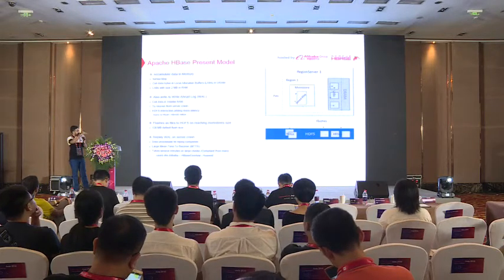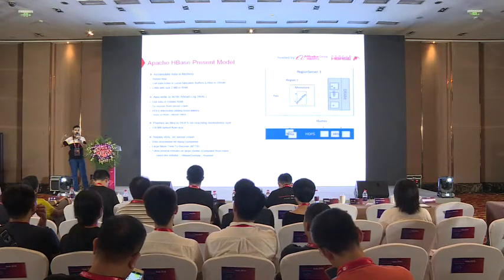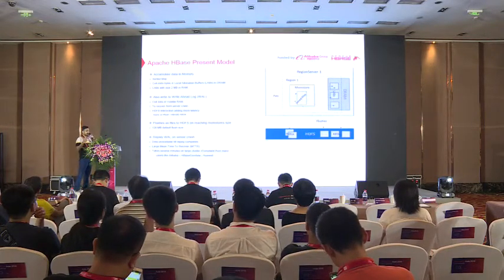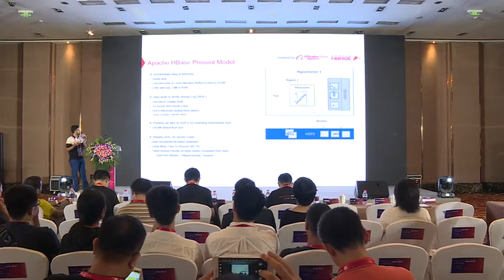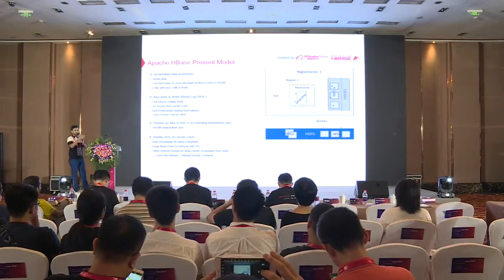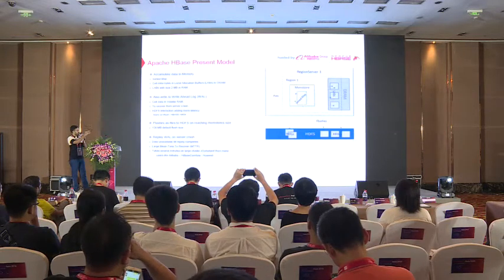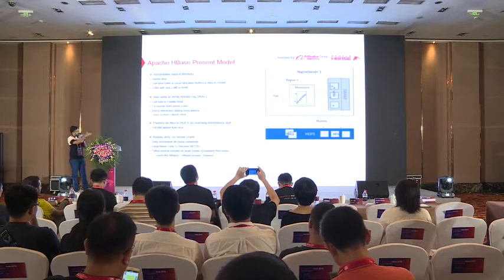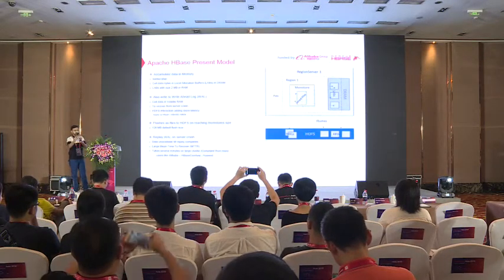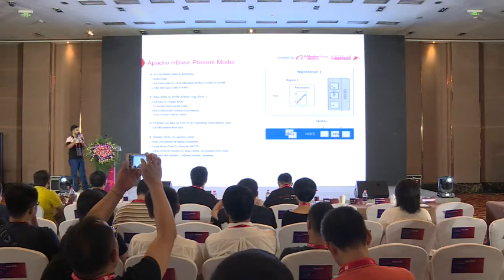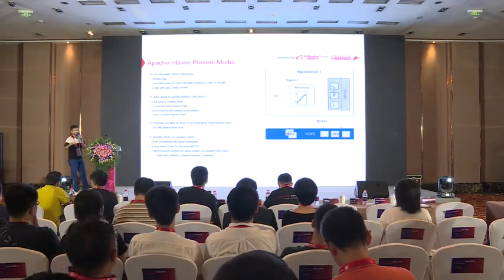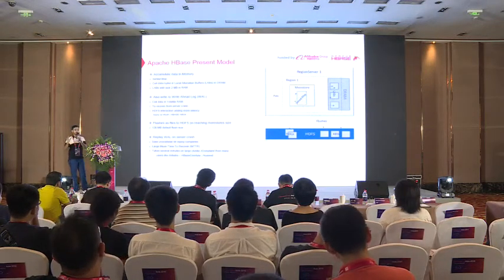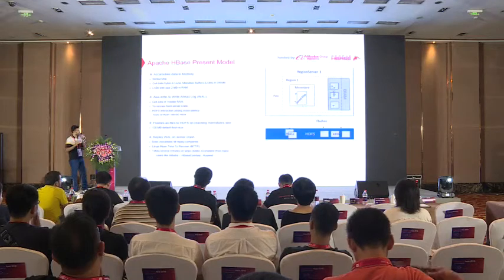We also have the write-ahead logs. Whenever writes are happening, we will write to WAL to recover from possible server crashes. The WALs are sitting in HDFS — they are HDFS files. Then, when it reaches the flush size — by default 128 MB — we will try to flush it as an HFile into HDFS. This is the present model. Later on, we will be having compactions anyway.